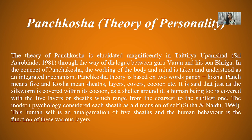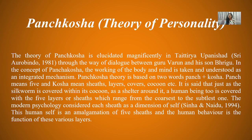These five layers range from the coarsest to the subtlest. Modern psychology considers each sheath as a dimension of self. The human self is an amalgamation of five sheaths, and human behavior is the function of these various layers.